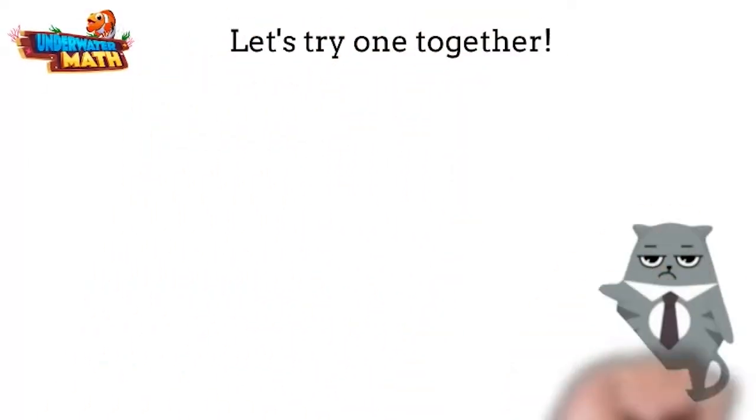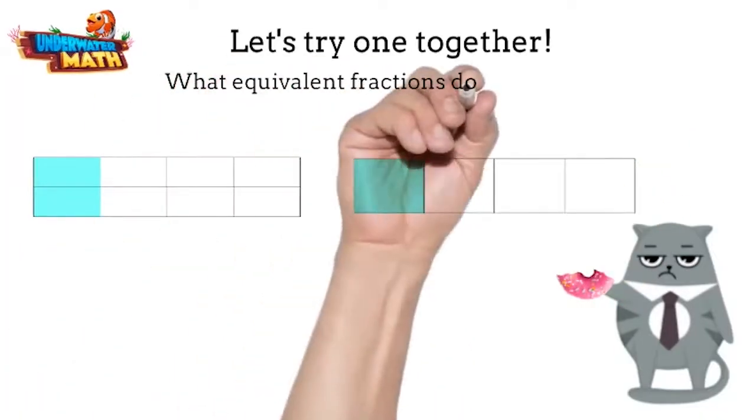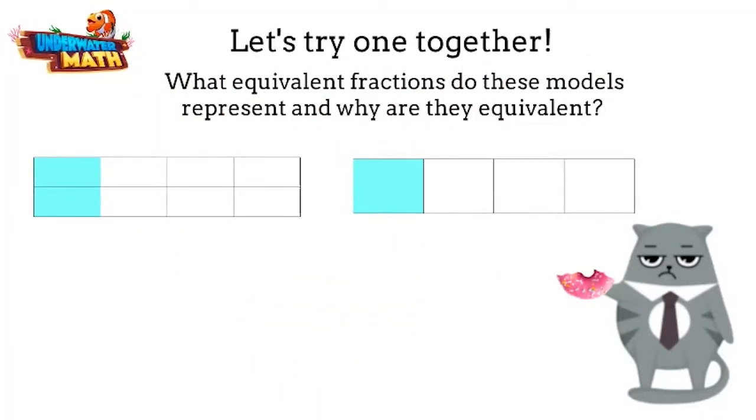Let's look at a problem together. I'm gonna need another donut for that. I'll get right on that. What equivalent fractions do these models represent and why are they equivalent?